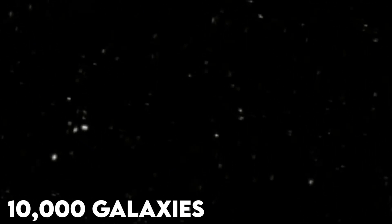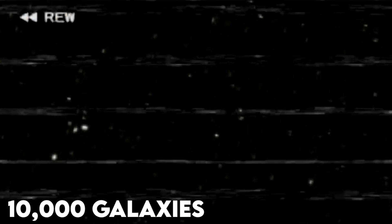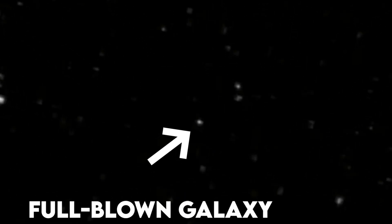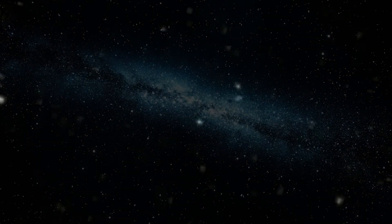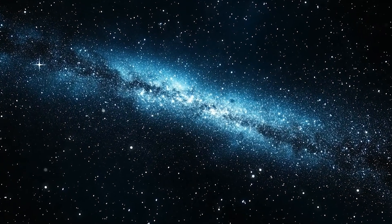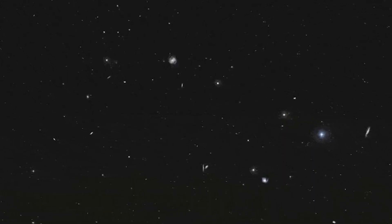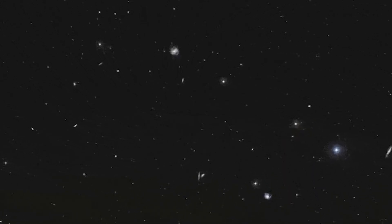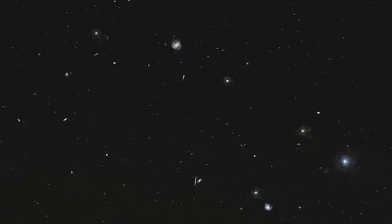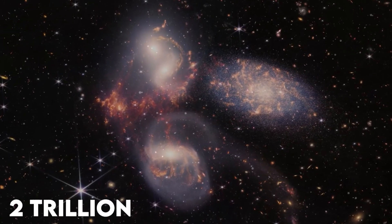What it found was anything but empty. That tiny speck of darkness turned out to be a galactic zoo housing around 10,000 galaxies, some dating back more than 13 billion years. Every little dot of light wasn't a star, but a full-blown galaxy, each packed with billions of its own stars, probably glaring back at us in confusion. This single image helped scientists estimate the total number of galaxies in the observable universe: a casual 2 trillion. No big deal.